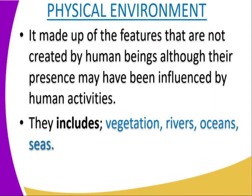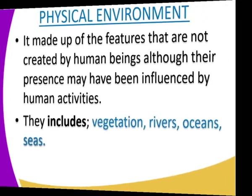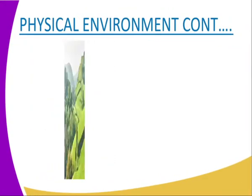We can divide environment into two branches. The first is the physical environment. These are things that are not created by human beings — even though their presence may have been influenced by human activities, they cannot actually be created by humans. This includes vegetation, rivers, oceans, and seas. Even if we can plant vegetation, we cannot create it from nothing. All such things fall under the classification of the physical environment.